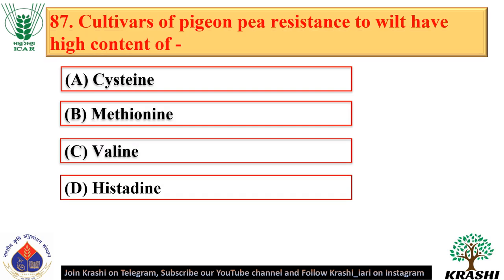Question number 87. Cultivars of pigeon pea resistant to wilt have a high content of cysteine — option A.